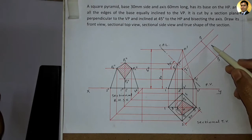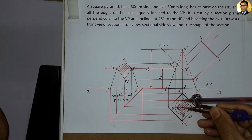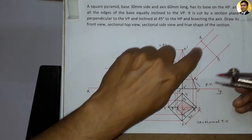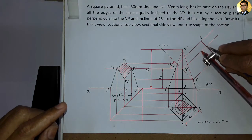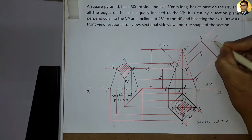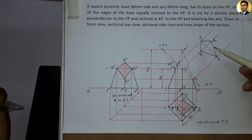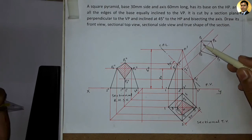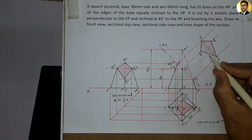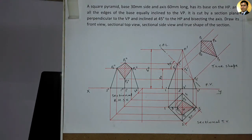Ab yahaan point P2 ko transfer karenge. Iske liye yahaan point O se point P2 tak ki radius lenge. O se upar ke P2 aur niche ke P2 ki radius same rahegi. Toh yahaan point O hai, woh true shape mein yahaan milega. Iske liye hum left aur right side arc draw karenge. Toh yahaan milega point P2, aur yahaan bhi milega point P2. Ab yahaan sabhi points ko dark line se jod lenge. Yahaan is area mein hatching lines draw karenge jo ki hum 45-degree ke angle par draw karenge, aur dual lines ke beech ka distance 2 to 3 mm rahega. Yeh view is condition ka true shape hai. Iske hi ke saath section of pyramid ka yeh problem yahaan complete ho gaya.